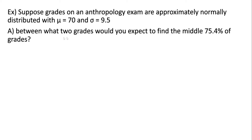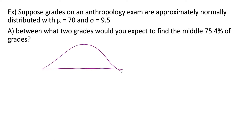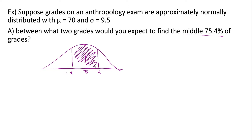We're being asked: between what two grades would you expect to find the middle 75.4% of grades? The first thing we do is draw a picture. We've been given the middle 75.4%, so that means we have one value above the mean and one below the mean — the mean being 70. This whole middle region is 0.754.